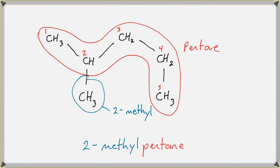And the number here is necessary, because the branch could have been on two, or it could have been on three. It wouldn't be on four, because if it was on four, we would have numbered it as two. So the options here are two or three, and so I have to specify which one it is, so this is a 2-methylpentane.